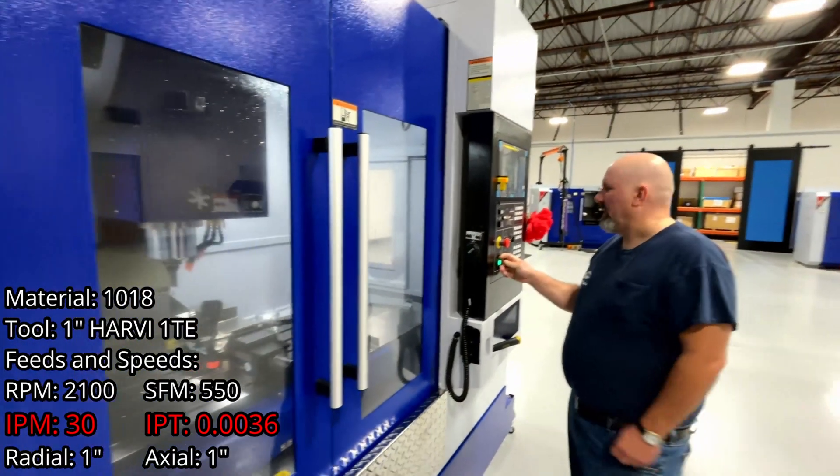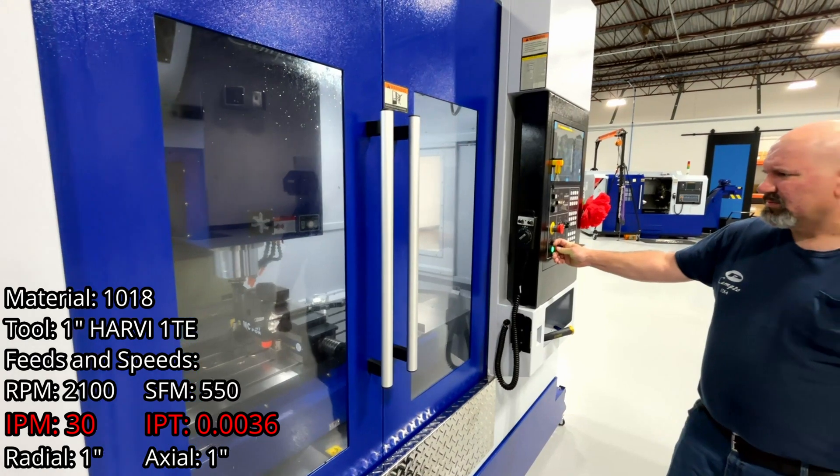Here we go. 30 inches a minute, 1018 steel, 1 inch full slot for the Harvey 1 TE.